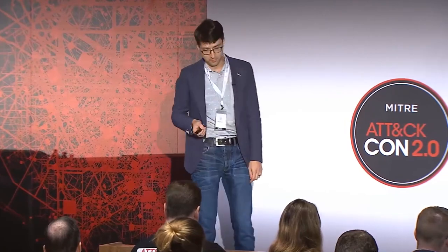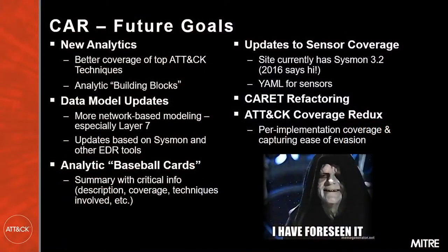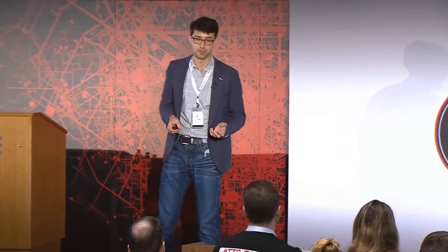Attack coverage is actually really important and it gets into some of the sub-techniques work that the core team is doing. In CAR, we have not only the ATT&CK technique but the actual level of coverage for each technique — right now we just say low, medium, or high, which is pretty arbitrary. We really need to think about that more scientifically. Also, a lot of analytics in CAR are brittle: if an adversary changes something simple like a file name or a hash, they can easily evade the analytic. We need to capture that as well.